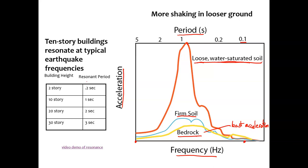There's an interesting effect called resonant period. Objects have a particular frequency — a particular period — at which they tend to shake, governed by their size. Large objects like 30-story buildings might shake back and forth once every three seconds. But short buildings might shake at a much faster resonant frequency. If you have particular shaking from an earthquake that matches the resonant frequency of your building, it's going to amplify and amplify, and then you're going to break those buildings very easily.